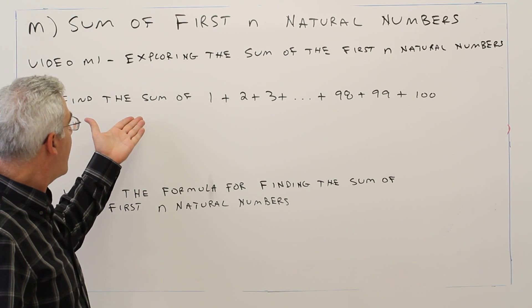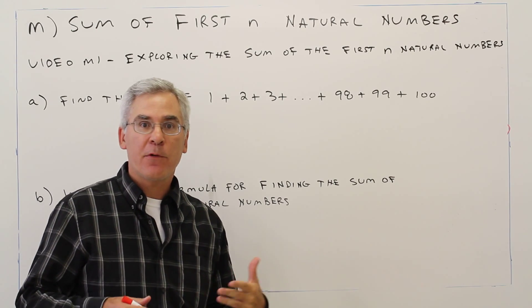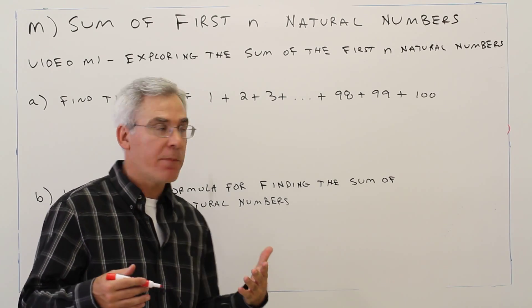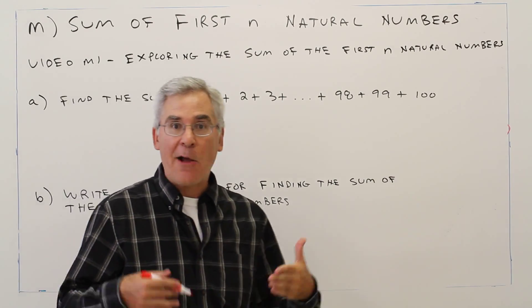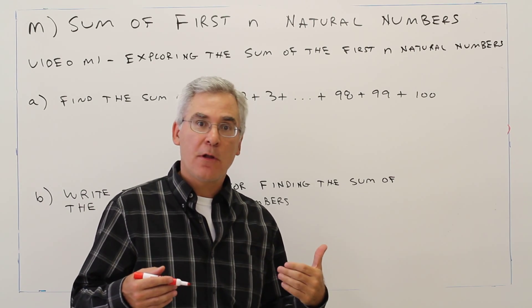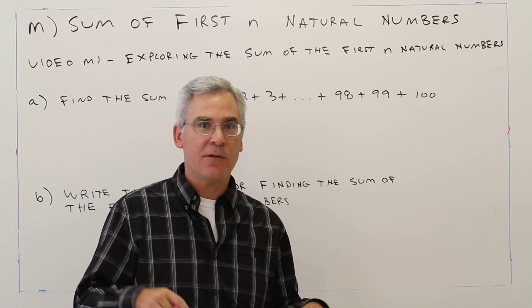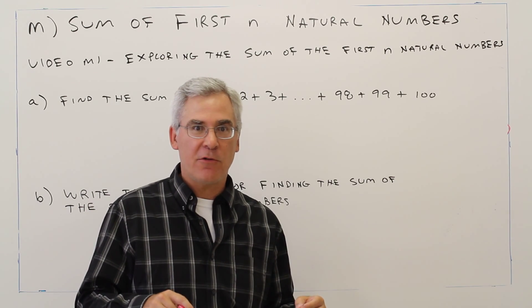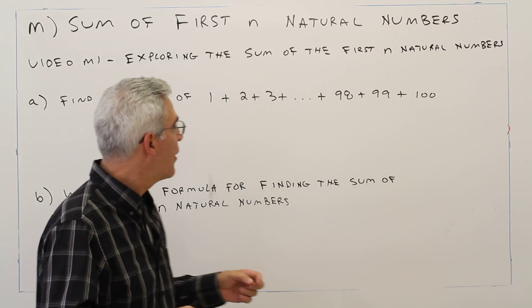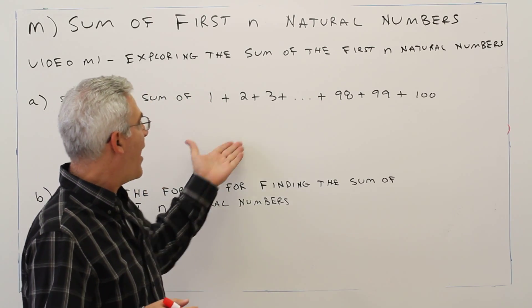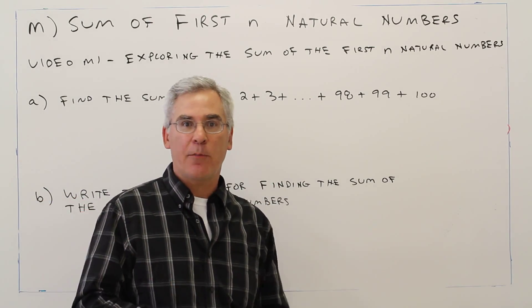There's a story that this is a problem that Gauss was given by his teacher at the age of 10. The teacher just wanted the kids to be occupied so he could grade papers and not be bothered. So the teacher said, class find the sum of the first 100 counting numbers.